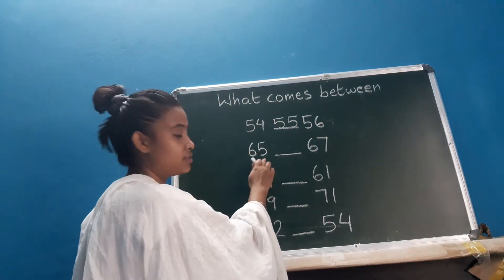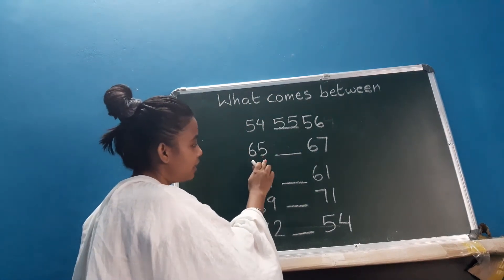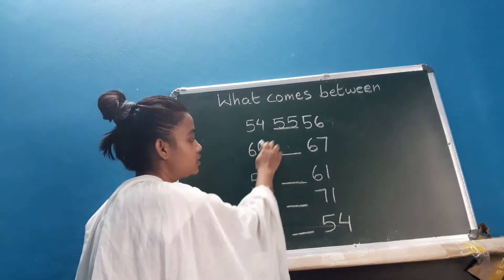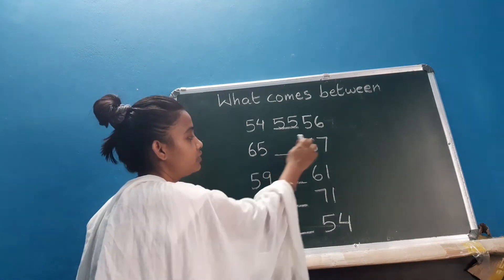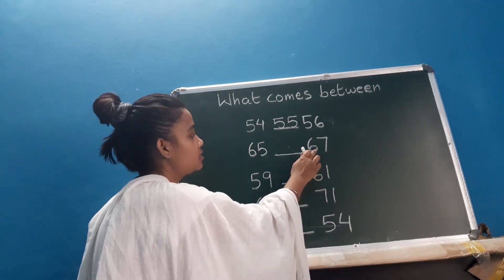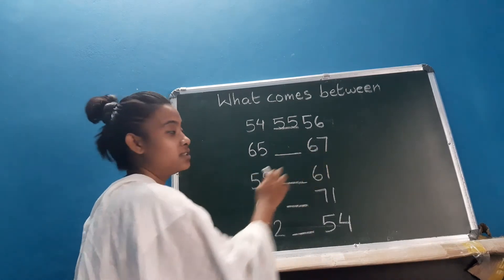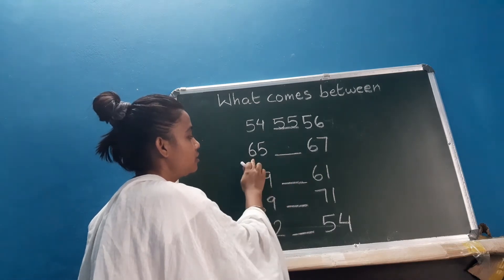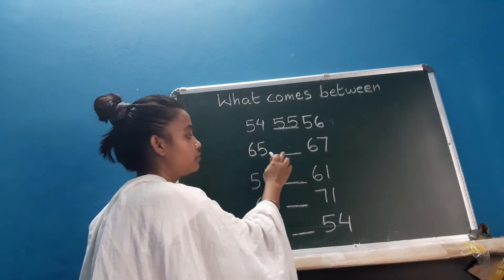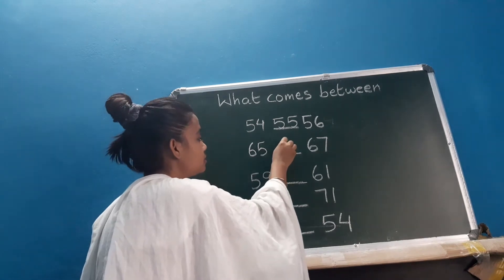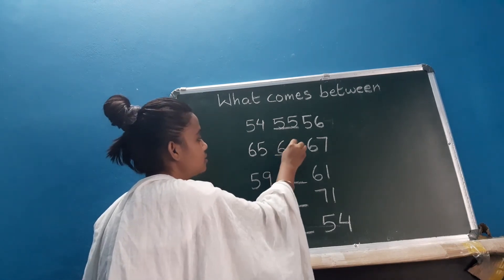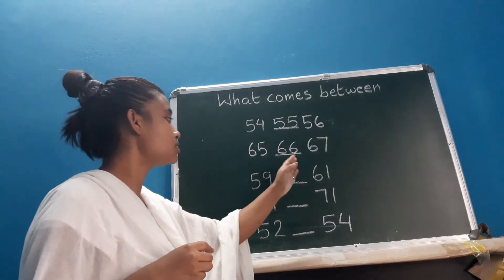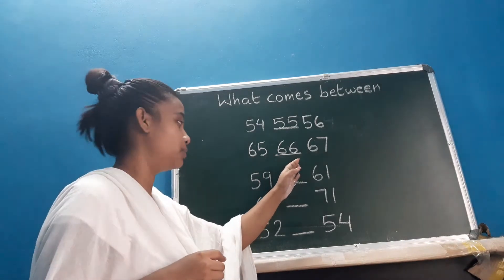Which number is this, children? This is 65. So here is a blank space and after that which number is this? 67. So which number is missing here? After 65, which number will come here? 66 was the missing number.